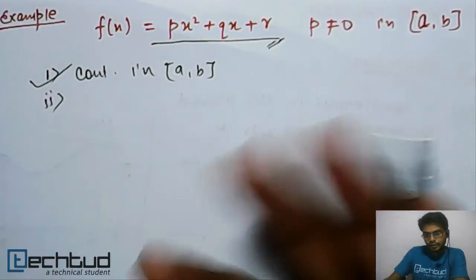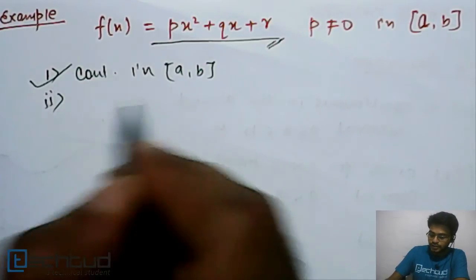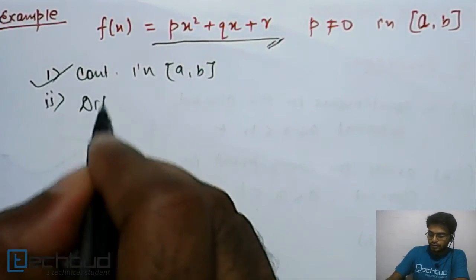Second condition is differentiable. Polynomial functions are differentiable, so the second is also satisfied.